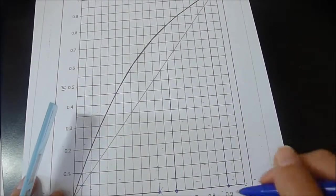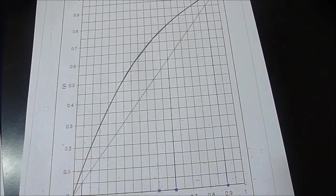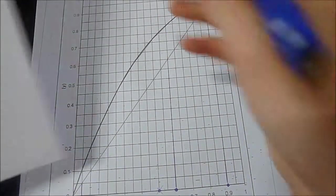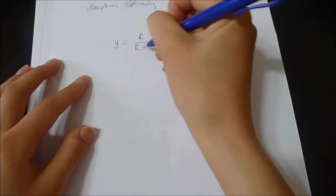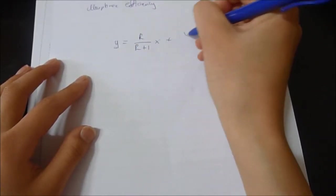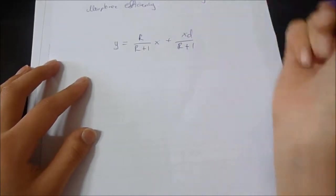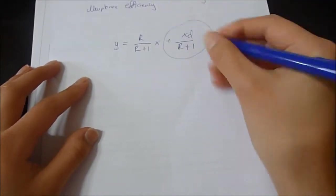Now we need to draw our top operating line. Our top operating line equation is Y equals R over R plus 1 times X plus XD over R plus 1. R is given, so this is the Y intercept.